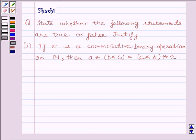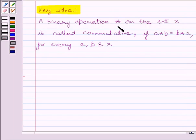First of all, let us understand the key idea to solve the given question. A binary operation star on the set X is called commutative if a star b equals b star a for every a, b belonging to set X.